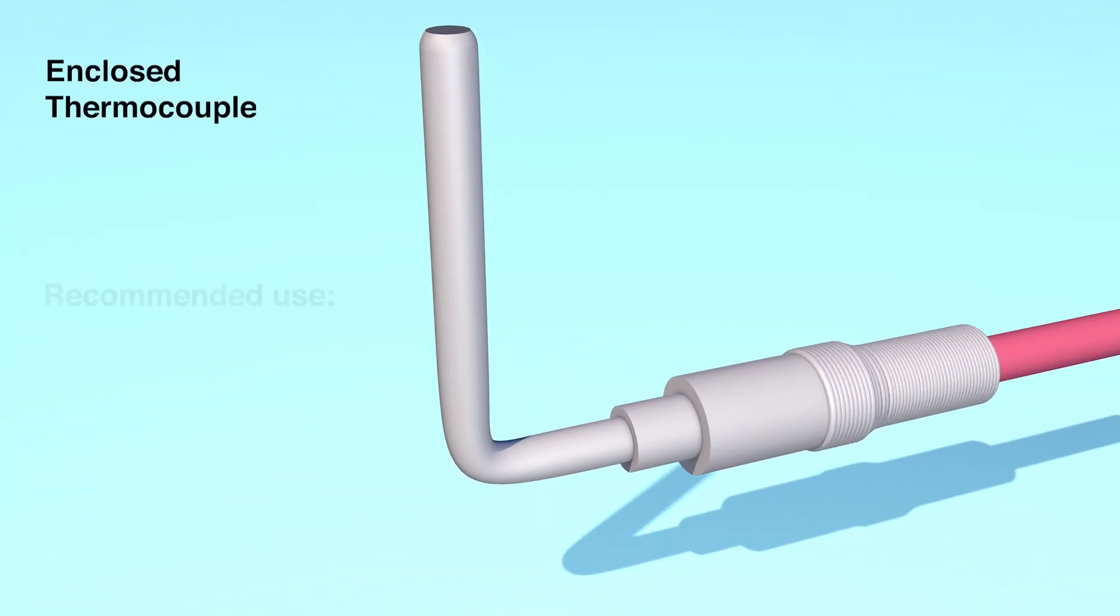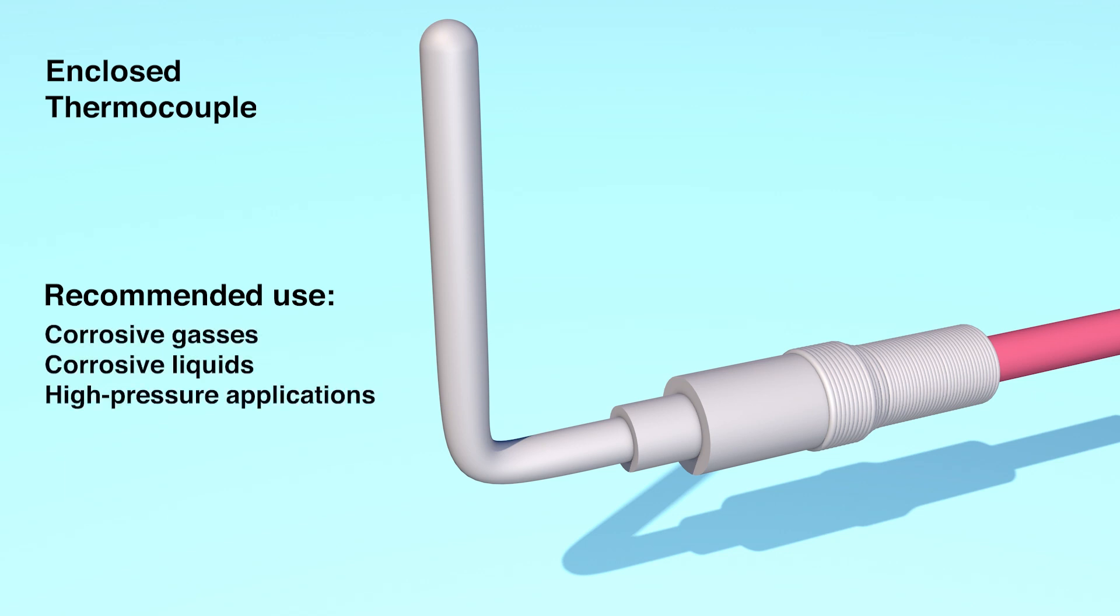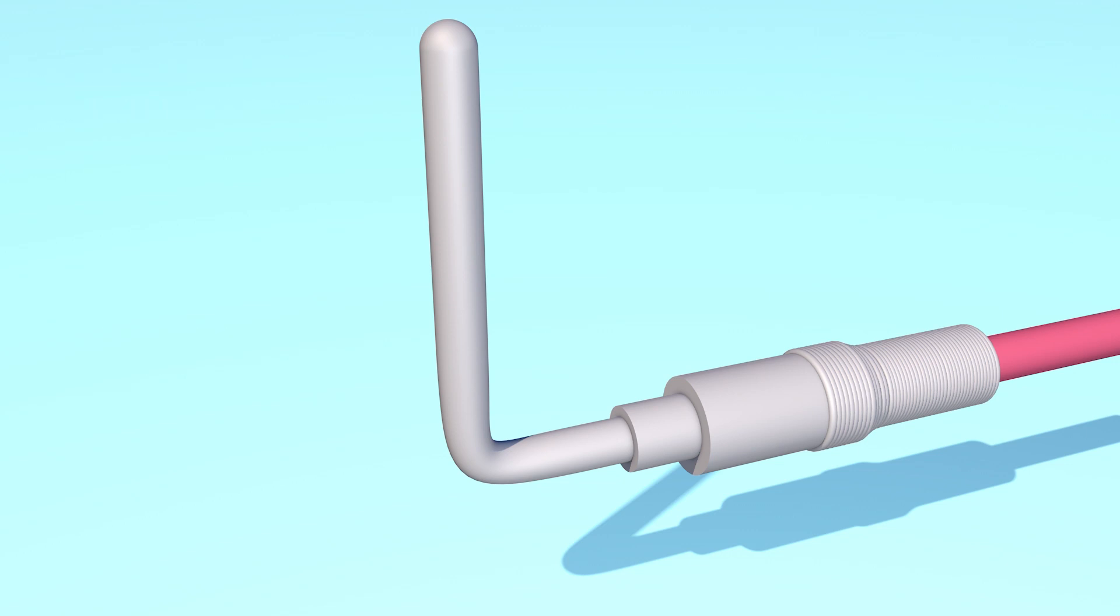Enclosed junction thermocouples are recommended when measuring the temperature of corrosive gases, liquids, or high pressure applications. Enclosed junction thermocouples are available either grounded or ungrounded.